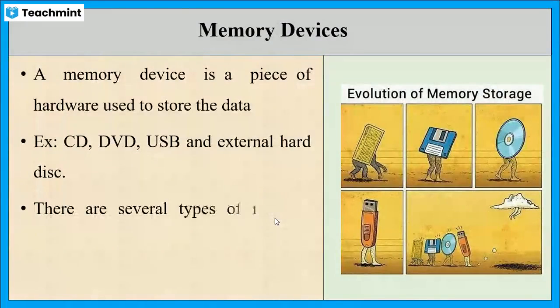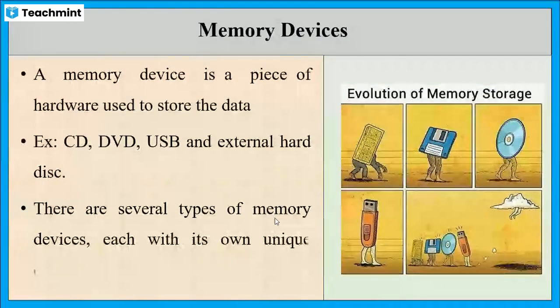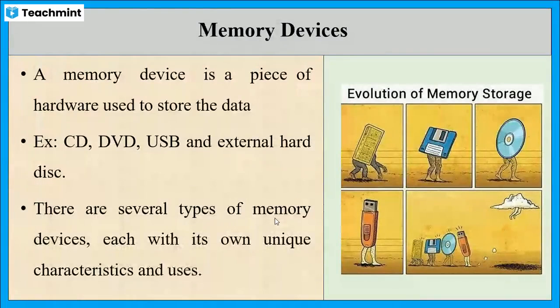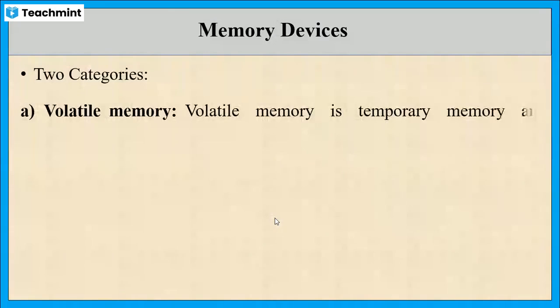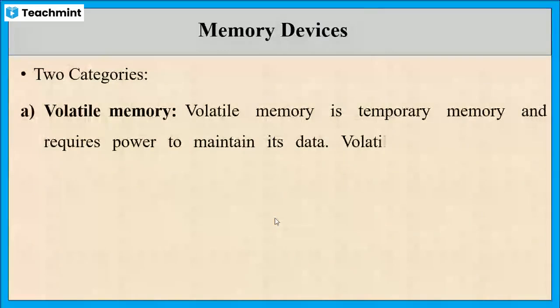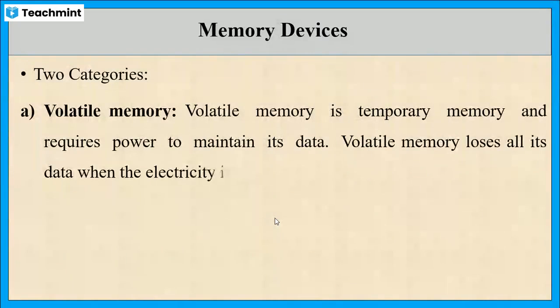There are several types of memory devices, each with its own characteristics and uses. Memory devices can be broadly classified into two categories. First one is volatile memory, which is temporary memory that requires power to maintain its data. When power is turned off, it will lose all its data. An example is random access memory or RAM.